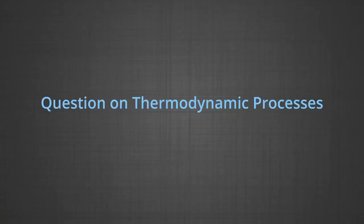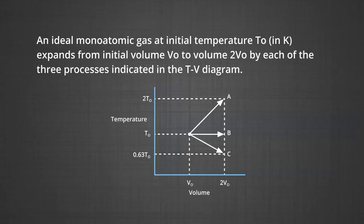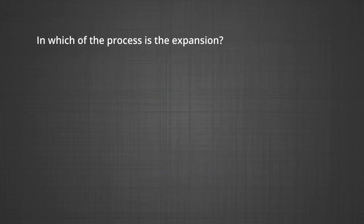The next question is based on thermodynamic processes. An ideal monoatomic gas at initial temperature T₀ (in Kelvin) expands from initial volume V₀ to volume 2V₀ by each of three processes indicated in the T-V diagram shown on the screen. In which of the processes is the expansion isothermal, isobaric, or adiabatic?